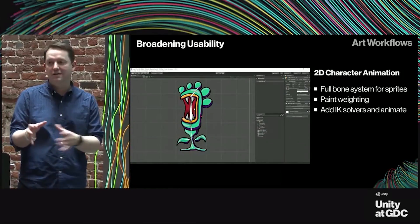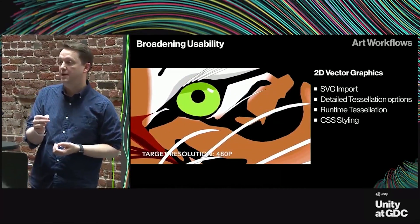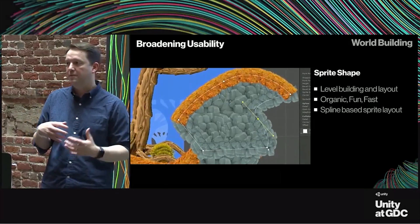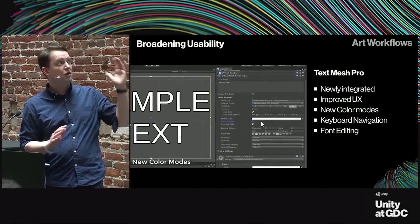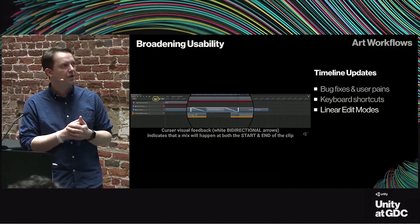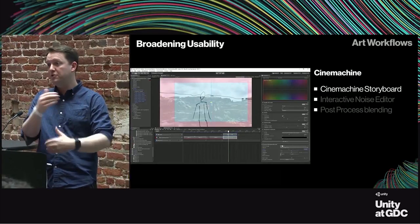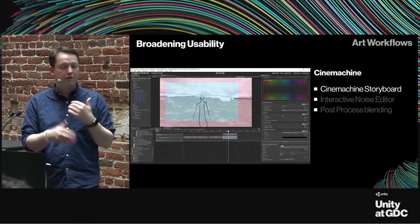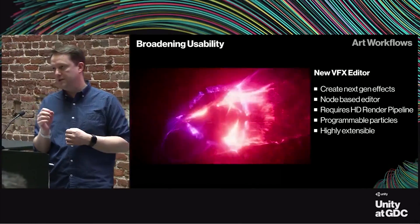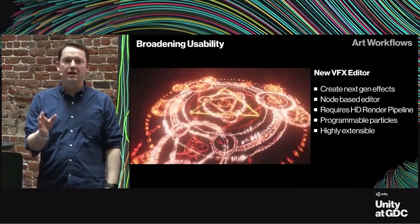First of all, Andrew showed off some demo footage of the 2D character animation and support for vector graphics. He also talked about Sprite Shape, which is a new tool for creating spline-based layouts and levels in 2D. He then went on to TextMesh Pro, which will be more tightly integrated with the editor. Timeline is getting tools for faster editing, Cinemachine is getting a storyboard feature to quickly test out ideas by overlaying references and sketches. And then, BAM — a new node-based video effects editor.